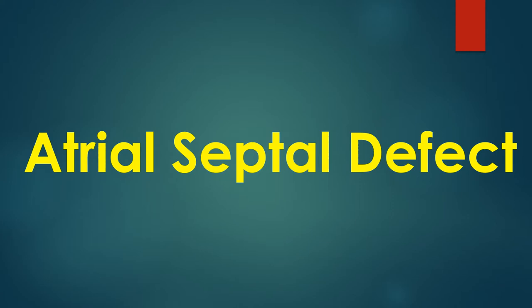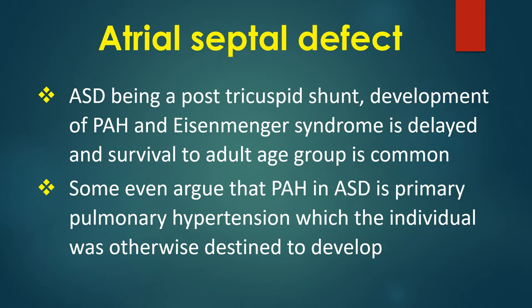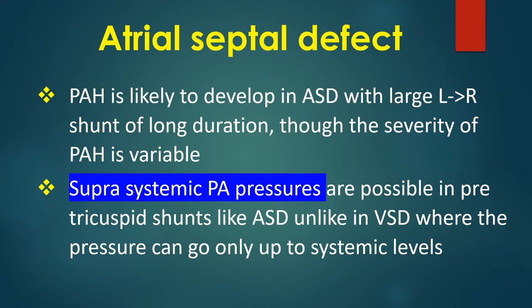Atrial septal defect is the commonest congenital heart disease in the adult, barring bicuspid aortic valve. ASD being a pre-tricuspid shunt, development of pulmonary hypertension and Eisenmenger syndrome is delayed and survival to adult age is common. Some argue that pulmonary hypertension in ASD may be primary pulmonary hypertension the individual was otherwise destined to develop. Pulmonary hypertension is likely in ASD with large left to right shunt of long duration, though severity is variable. Supra-systemic pulmonary arterial pressures are possible in pre-tricuspid shunts like ASD, unlike VSD where pressure can only reach systemic level.